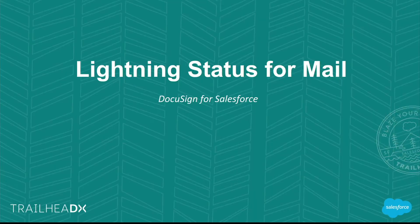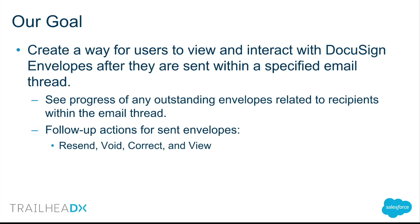So Lightning Status for Mail. We wanted to create a component that would allow users to interact with DocuSign envelopes within the context of an email thread — so they can see envelopes in transit. The end goal is to accelerate the signing process. They can see exactly what stage the envelope is in, and there are follow-up actions that can be taken if needed: we can resend the envelope if someone misplaced or deleted the email, void it if it's no longer needed, correct it — making content changes, adding more documents, changing the signing order, adding more recipients — and of course view it.